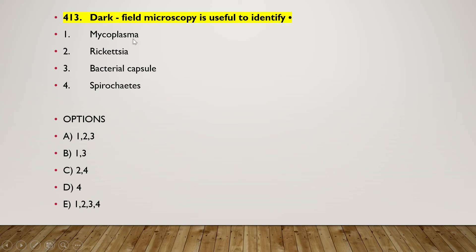Next question: dark field microscopy is useful to identify — (1) mycoplasma, (2) rickettsia, (3) bacterial capsule, (4) spirochetes. The right answer is option D — only four is the correct answer.